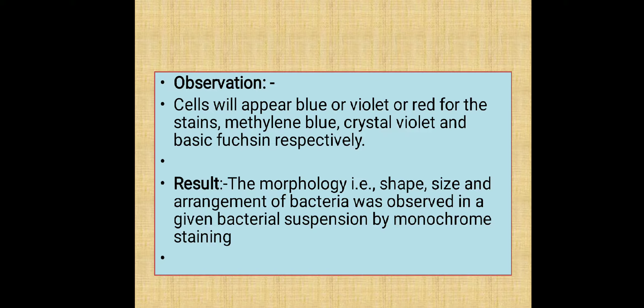Observation: cells will appear blue, violet, or red for the stains Methylene Blue, Crystal Violet, and Basic Fuchsin respectively. Result: the morphology — that is, size, shape, and arrangement — of bacteria was observed in a given bacterial suspension by monochrome staining. Thank you for listening.